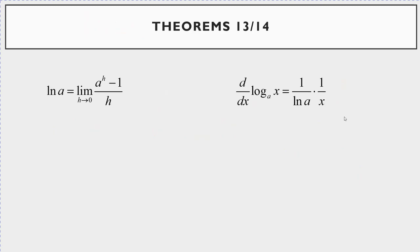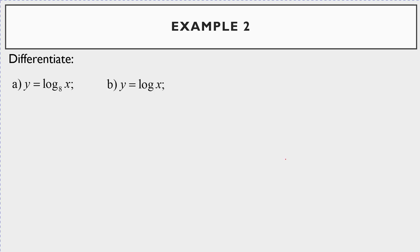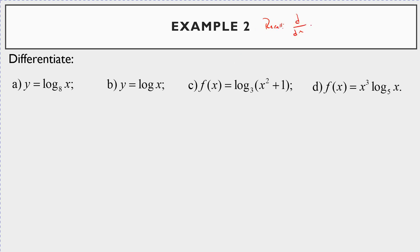Now let's move into derivatives of logarithms. There are two theorems from your text — Theorems 13 and 14. We know that ln(a) equals the limit as h→0 of (a^h − 1)/h. And the key derivative formula: d/dx of log base a of x equals 1 over ln(a), times 1 over x. Whatever the base of the log is, you write it as 1 divided by the natural log of that base, times 1/x.